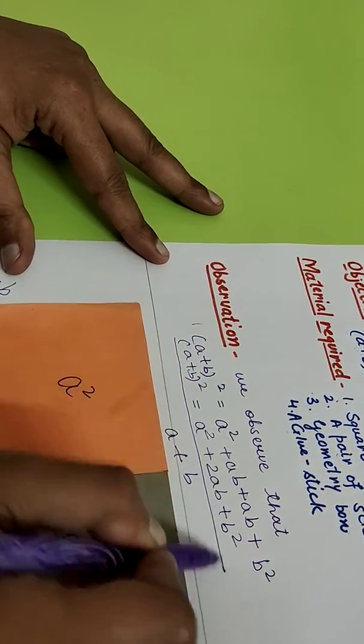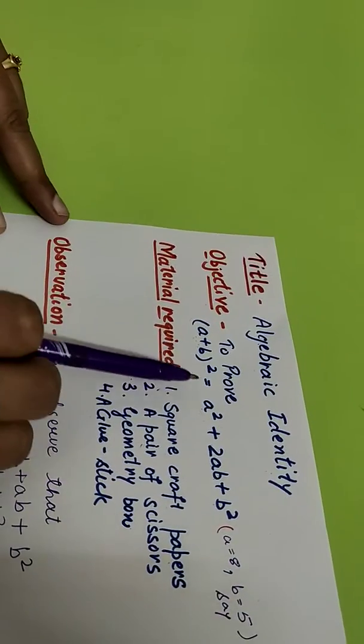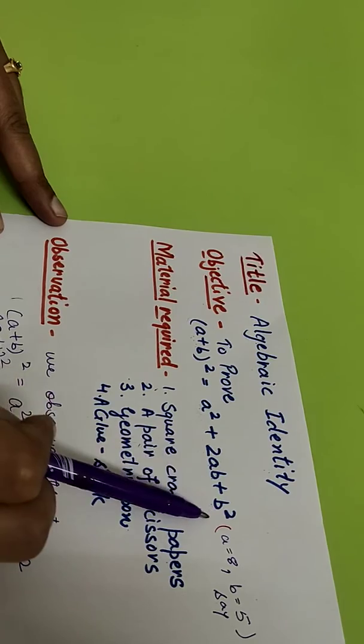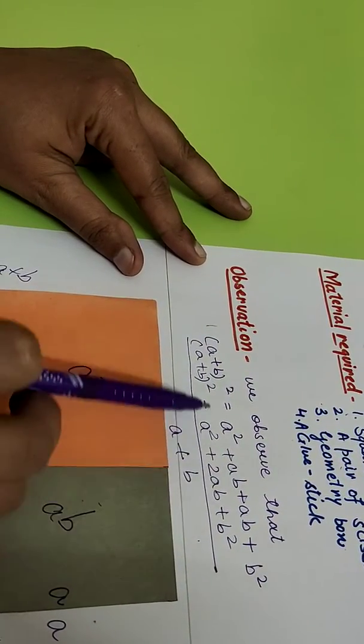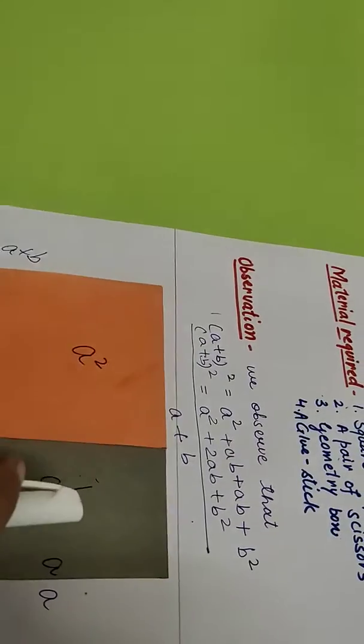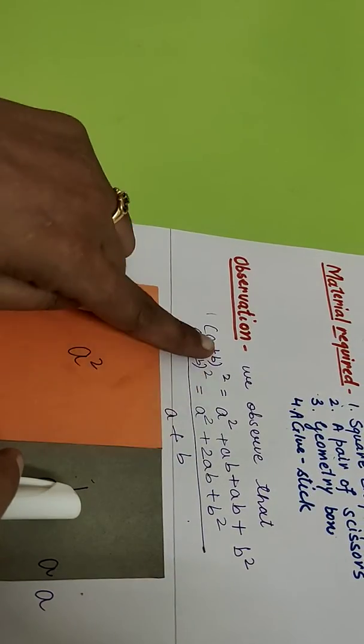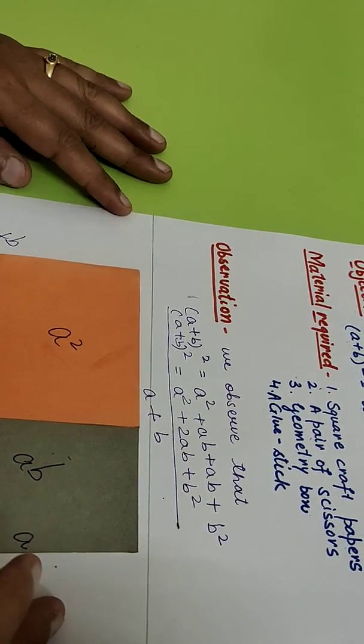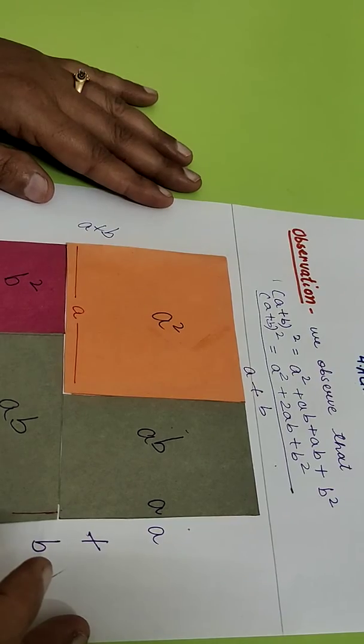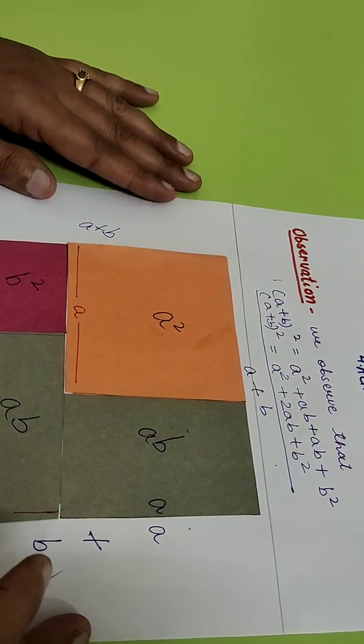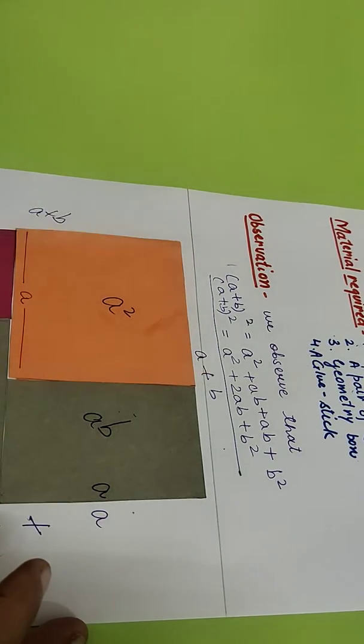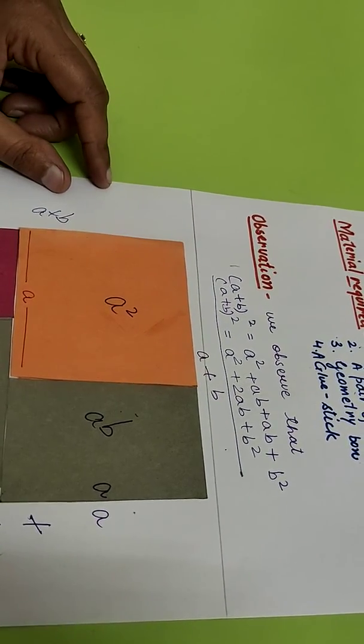So now you can see what we have and what was our objective? A plus B whole square equal to A square plus 2AB plus B square and this is the result. So in this way we can prove that why these 2 things are equal. I hope you really enjoy this video and in this way by this activity you can remember why this identity is like this and you can do the activity in the same manner. Thank you.